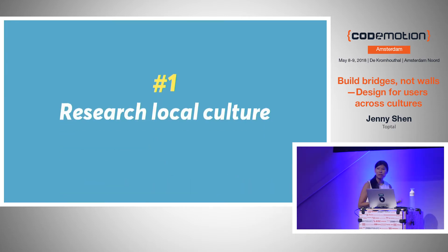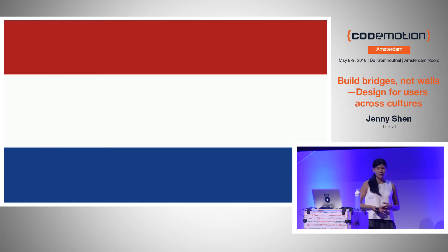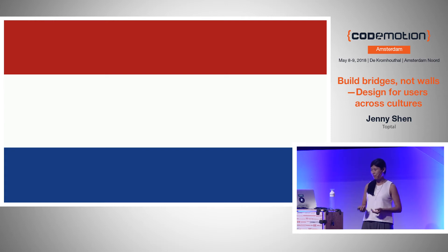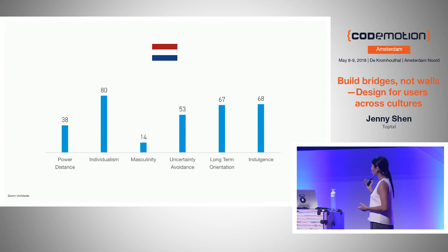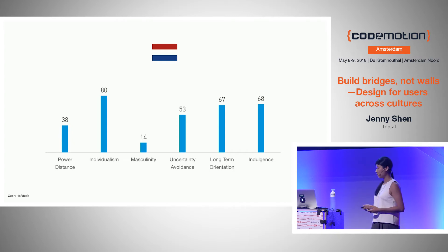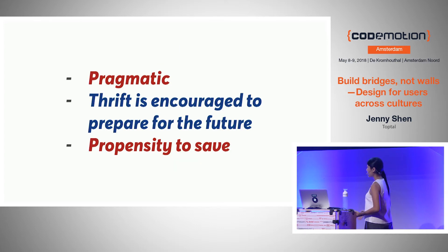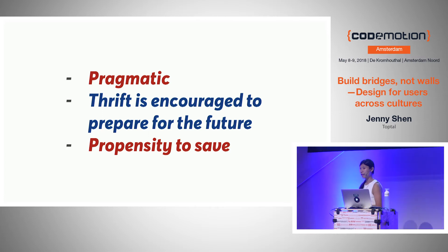The first place to start would be to research the local culture. I've lived in Holland for three years now, and I've been learning about Dutch culture and lifestyle every single day. According to Hofstede, Dutch culture scores high in individualism, uncertainty avoidance, long-term orientation, and indulgence. Hofstede's analysis is that Dutch people are pragmatic, thrifty, and have a high tendency to save for the future.